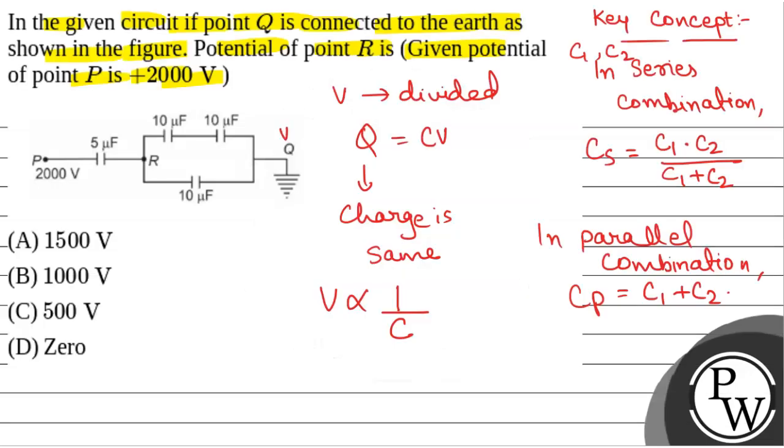Here point Q voltage is zero and point P voltage is 2000 volt. Now between R and point Q, if we have equivalent capacitance, we can redraw. This is a 5 microfarad capacitor and the equivalent capacitance will be 20 into 10.